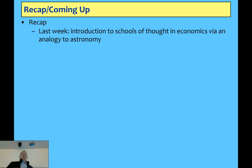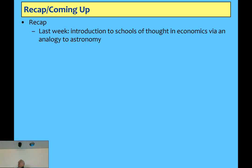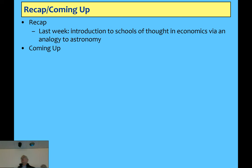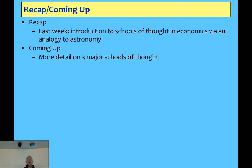So what I talked about last week was the different schools of thought in economics and the state that economics is in right now, which is highly unusual. There hasn't really been a period of debate in economics like we're having right now since the mid-1930s. So you're in a very, very unusual period in economics. I think there's a strong analogy you can make to the state of astronomy back at the time of Copernicus, when the discoveries of the moons of Jupiter completely changed the nature of astronomy.